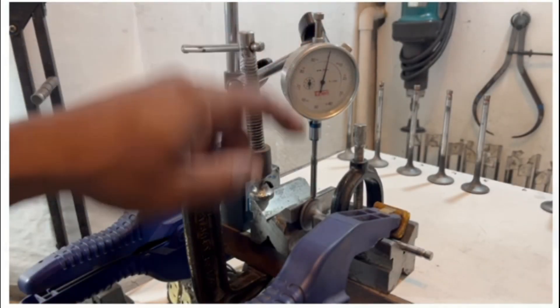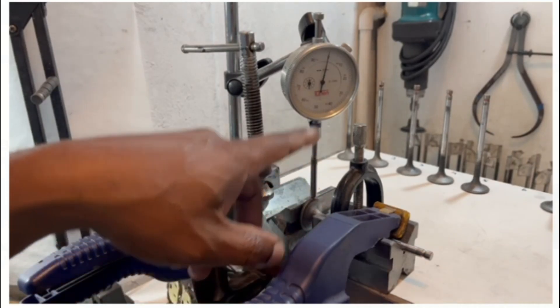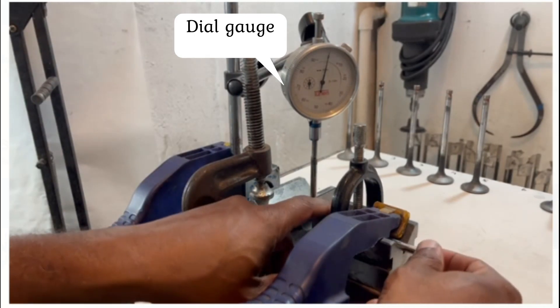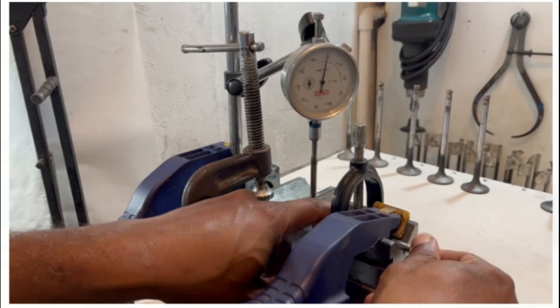I put the valve on this v-block and I'm measuring deflection here. The meter is zeroed out, so I'm just going to rotate the valve. As I rotate, you see you get a deflection of about